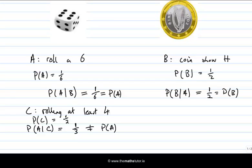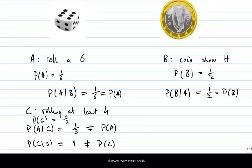What about the other way around — the probability of C given A? What's the probability of rolling at least a 4, given that we roll a 6? Well, if we roll a 6, then we have definitely rolled something that's at least 4. So that probability is 1. And that's different from the probability of C, which was a half.